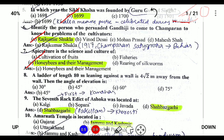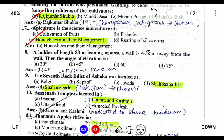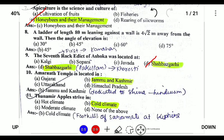Question number 9: the seventh rock edict of Ashoka is located at Shahbazgarhi, which is located in Pakistan. It is written in Kharosthi script. The first rock edict is located at Kandahar, also in Pakistan.